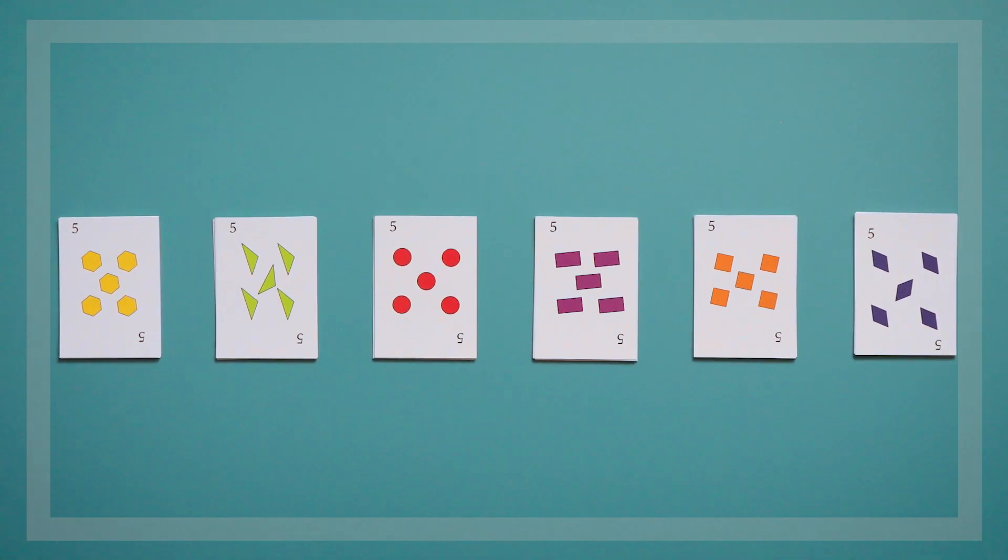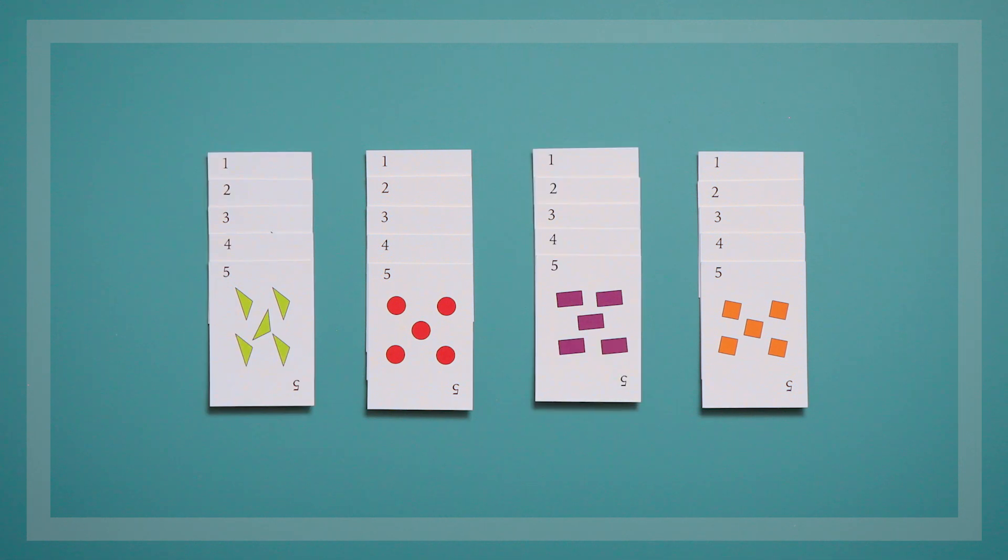To start, we'll choose the 1-5 cards of the circles, squares, triangles, and rectangles.